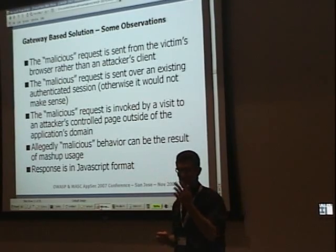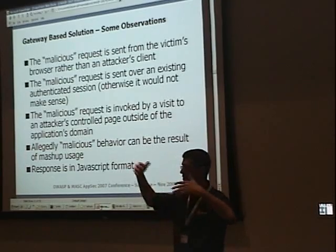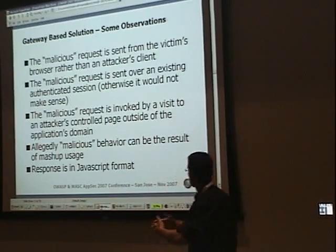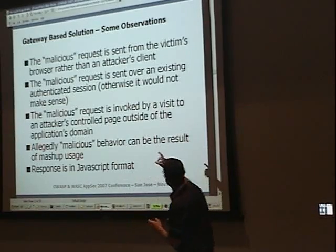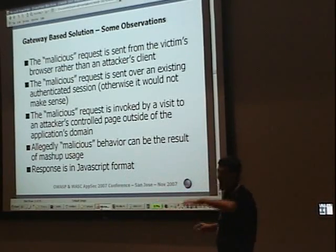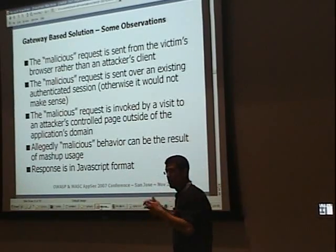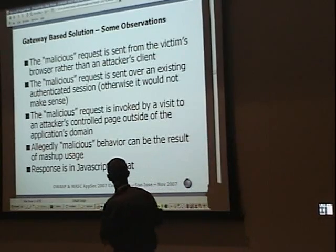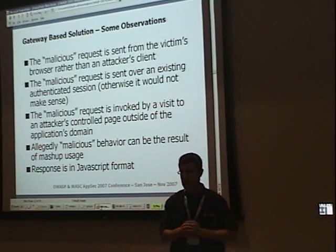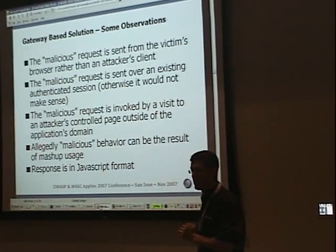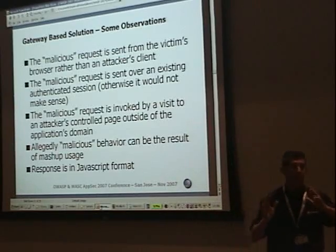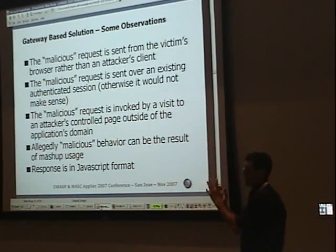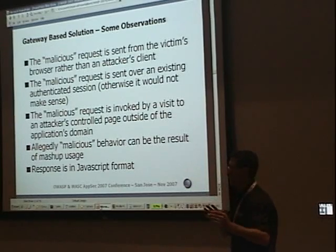The second observation is that a cross-site request forgery attempt would always be part of an authenticated session — it wouldn't make sense any other way. A request that might be cross-site forgery must be part of an authenticated session. The request is invoked by a visit to an attacker-controlled page outside of that domain, so it will have a referrer value that is not part of the target application. And the response in the case of JavaScript hijacking is JavaScript — which is very important.